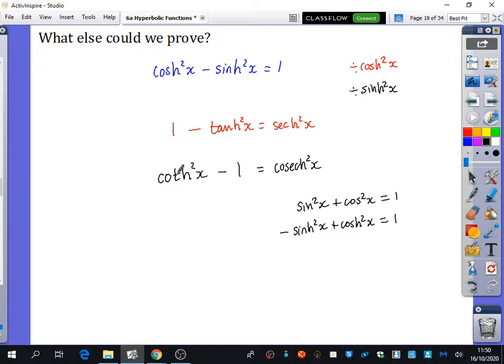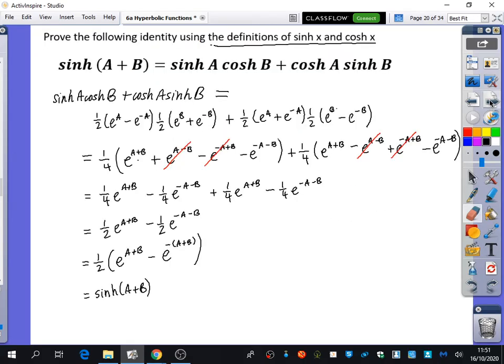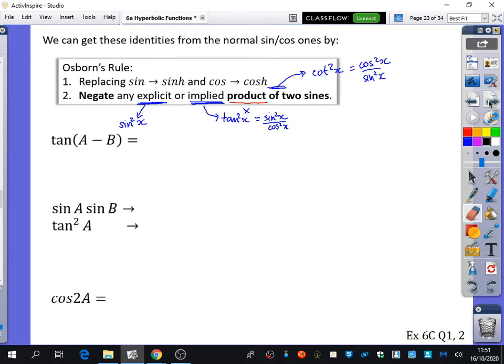Now, I won't go into why Osborn's rule work because I don't know why it works. Okay? I haven't looked into it, and it's something that's definitely beyond the specification. I didn't come across it with the reasons why for my uni stuff. But actually, it's probably something I should have a look into. But it's a rule that works that helps you to translate it from trigonometric to hyperbolic.